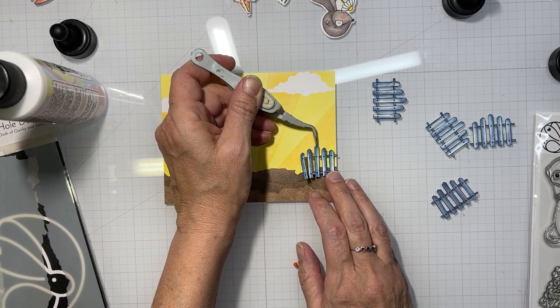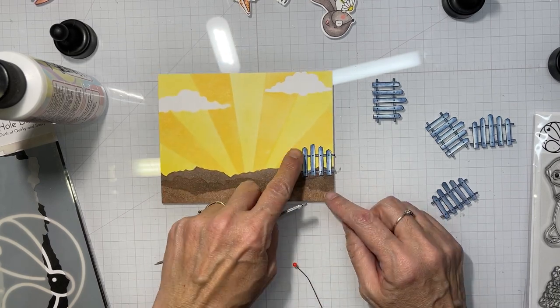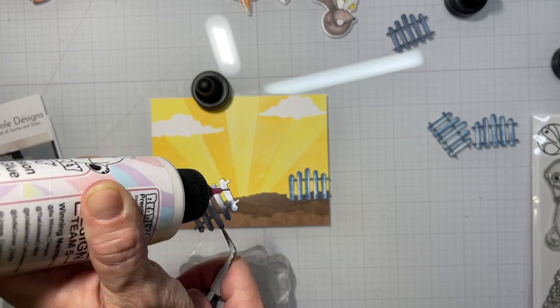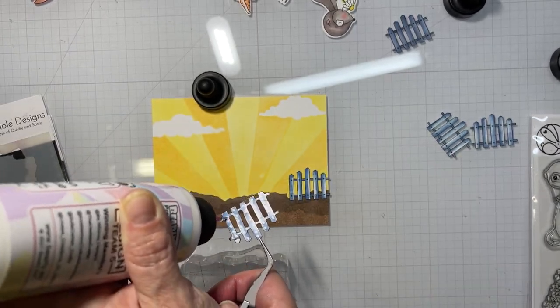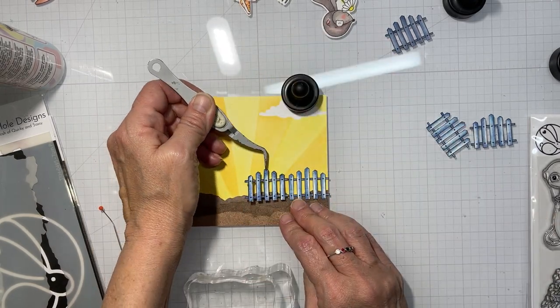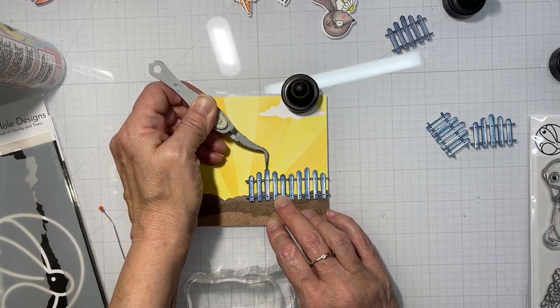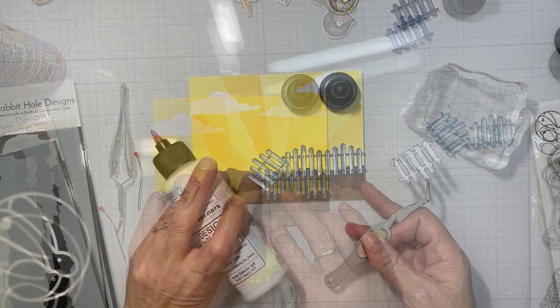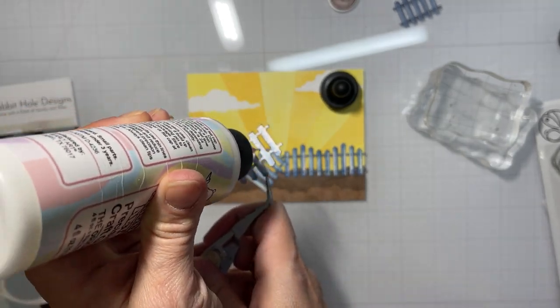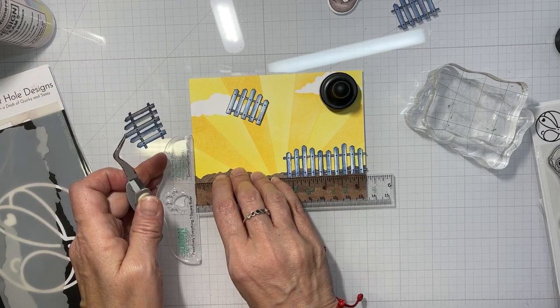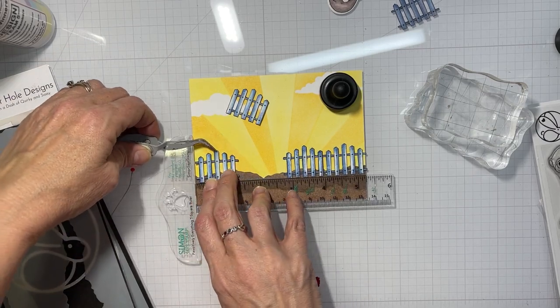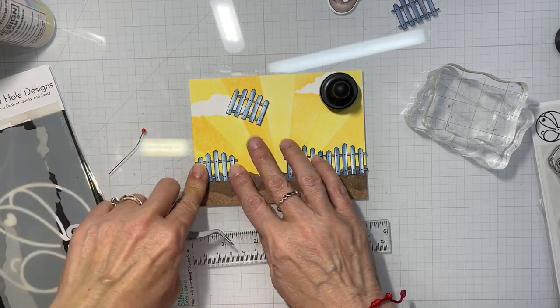And my favorite color is green. Okay, so I'm going to trim this down to five and a quarter by four. And then I'm going to glue my fence, which I did buy the I Really Dig You dies for this set. But I also used an X-Acto blade to cut out the little white spaces in between the fence posts.